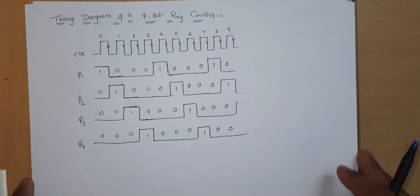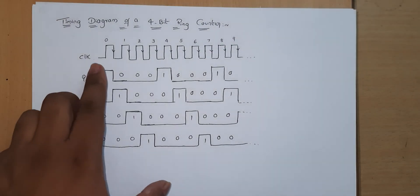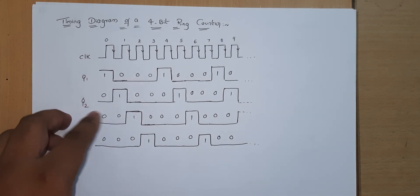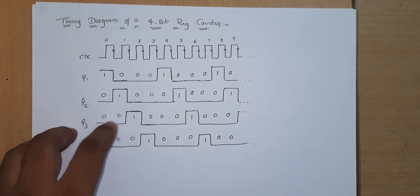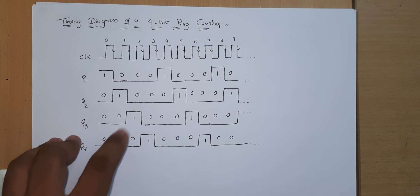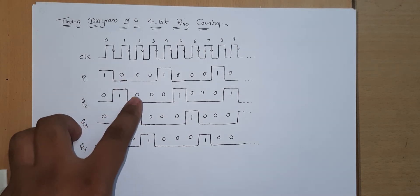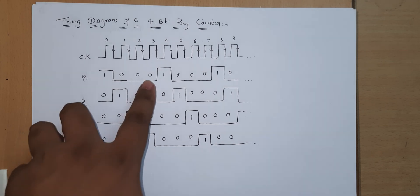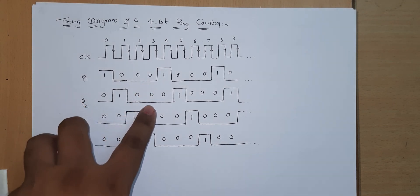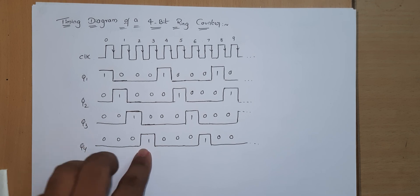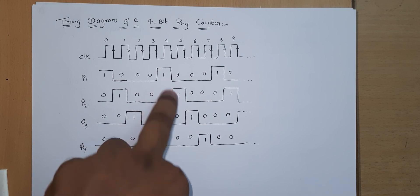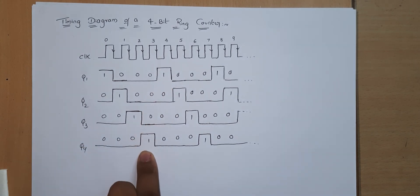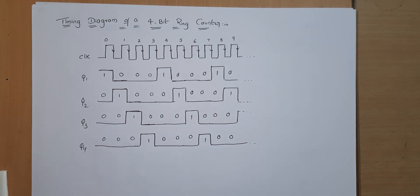The timing diagram shows: at clock pulse 0, Q1=1, Q2=0, Q3=0, Q4=0. At clock pulse 1: Q1=0, Q2=1, Q3=0, Q4=0. At clock pulse 2: Q1=0, Q2=0, Q3=1, Q4=0. At clock pulse 3: Q1=0, Q2=0, Q3=0, Q4=1. After the fourth clock pulse, Q1 returns to 1 and the pattern repeats. This is how the 4-bit ring counter works.